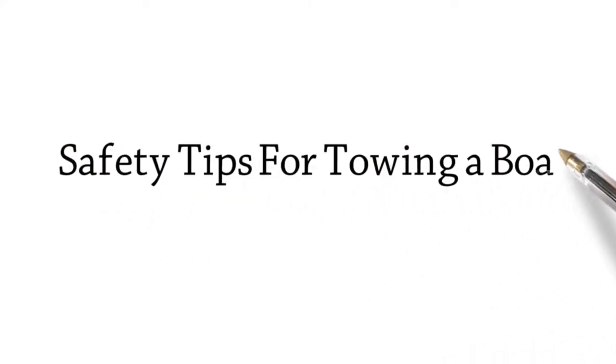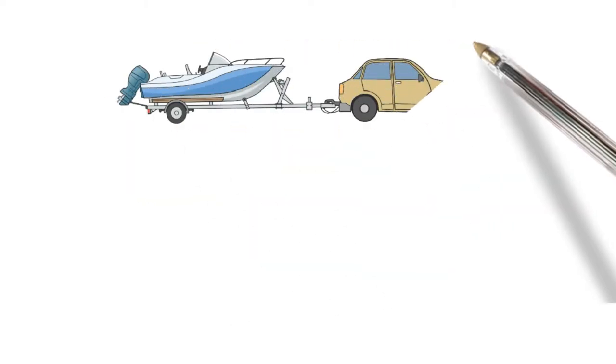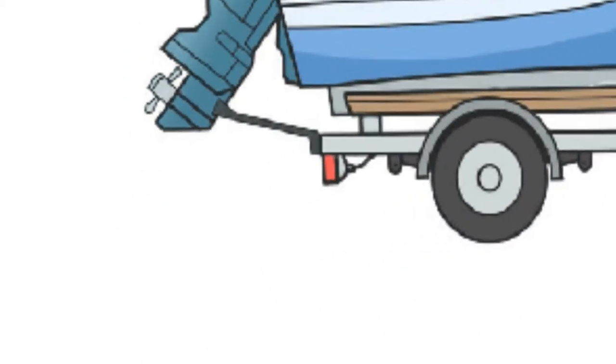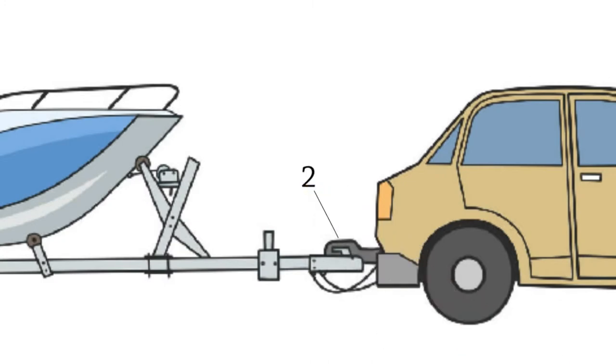Safety tips for towing a boat. Before you start towing a boat down the road, you should perform a safety inspection. Here is a checklist of the different parts you'll want to double-check. Number one: check to make sure that your lights are correctly connected and that they are properly working.